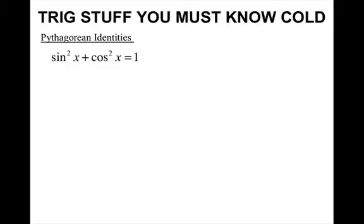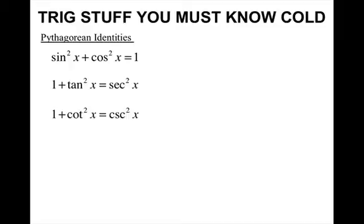Some stuff that you need to know about trig cold, which means this stuff should be memorized from math analysis. The Pythagorean identities: sine squared x plus cosine squared x equals 1; 1 plus tangent squared x equals secant squared x; 1 plus cotangent squared x equals cosecant squared x.